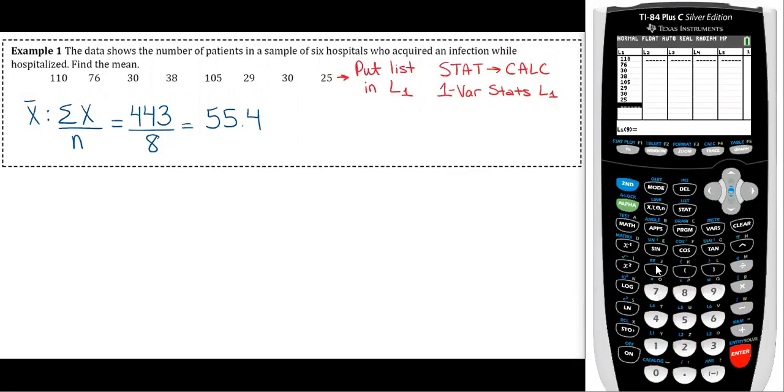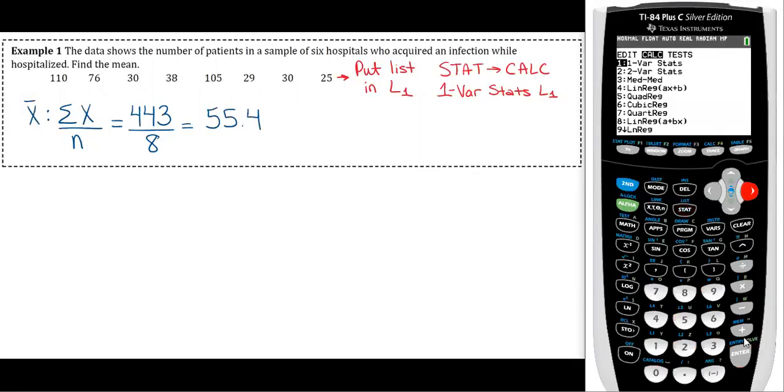Once you have them in a list then you're going to go to stat, go over to calculate, and then you want one-var stats. Your L1 should be your list, keep your frequency list blank, and then calculate. The top one x̄, that's your sample mean, so 55.375, so that's where I got the answer of 55.4 because I rounded that.